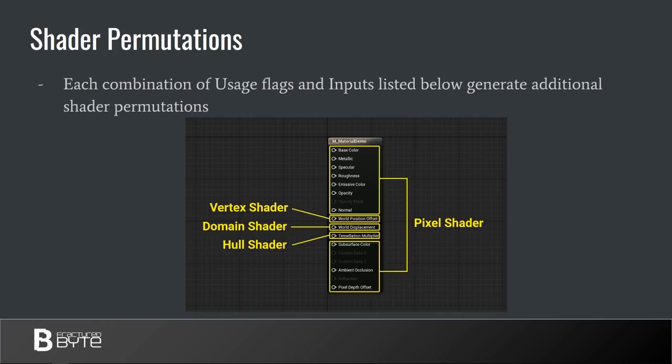Now onto the shader permutations issue. You can see a screenshot that unfolds the underlying structure of the material as it is compiled into shaders. You need to know this to effectively optimize your materials based on usage flags and material inputs. For instance, if you plug in just a constant color node into the world position offset input of a material and assign it to a skeletal mesh, this material will produce 20 additional shaders. Every additional input that is not in the same shader adds additional shaders to compile. You should also keep an eye on translucency and tessellation settings, as they also generate additional shaders.